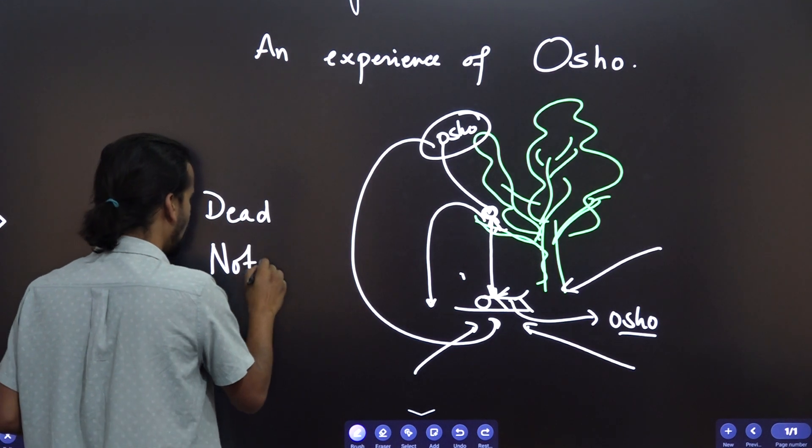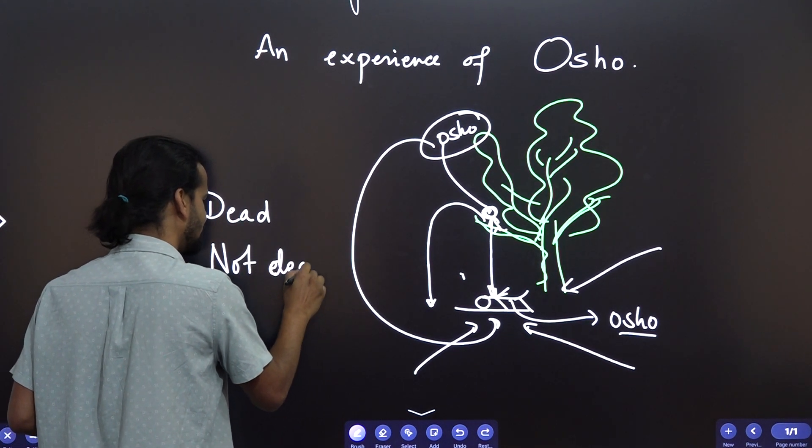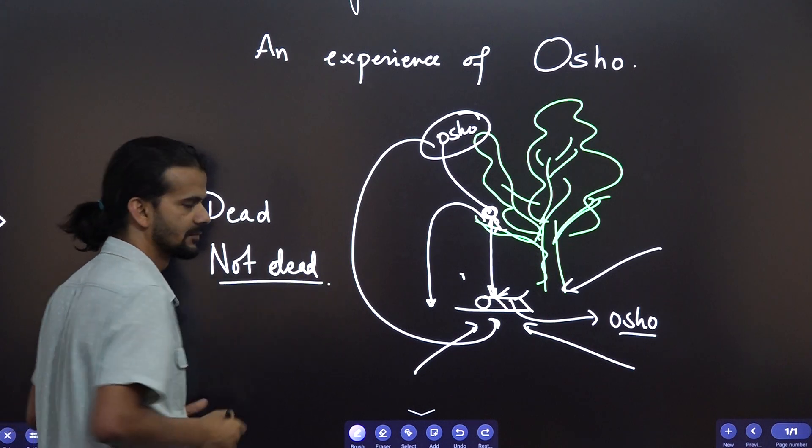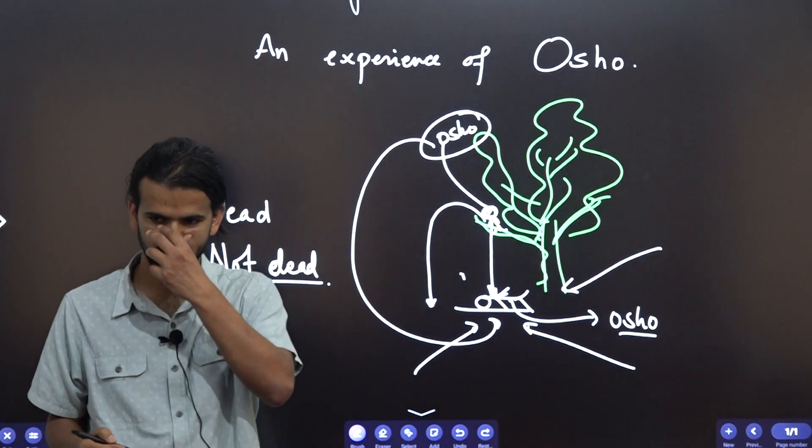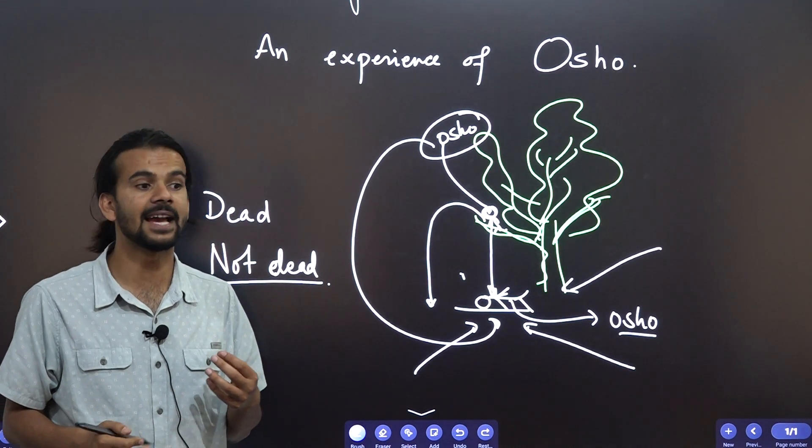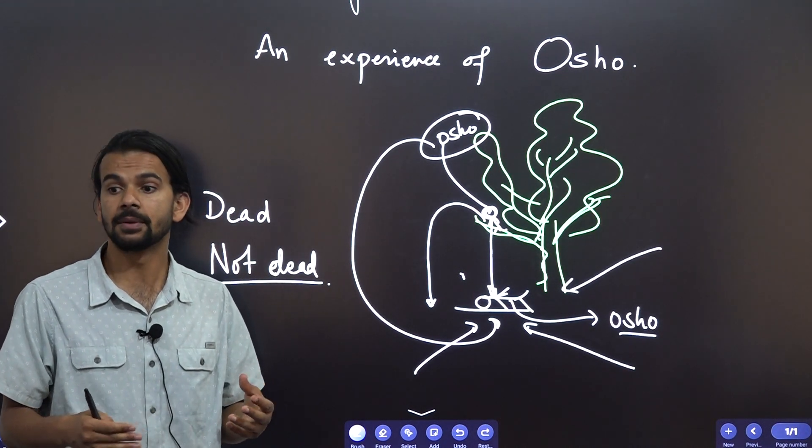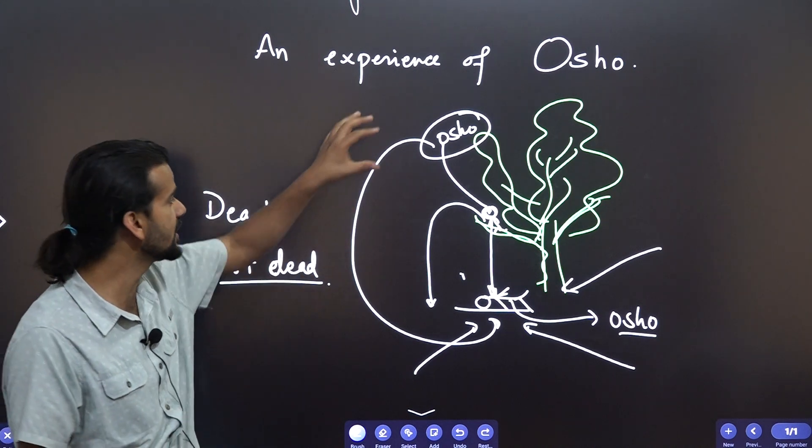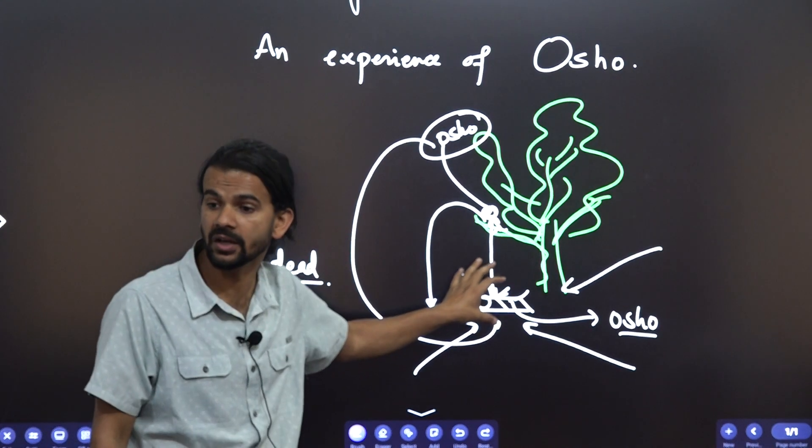He was not dead. Why would you say that he was not dead? He had lost his consciousness. But if he had lost his consciousness, how could he see what was happening with his body?